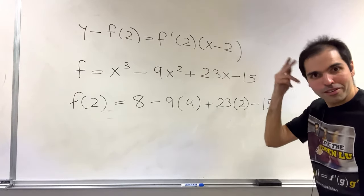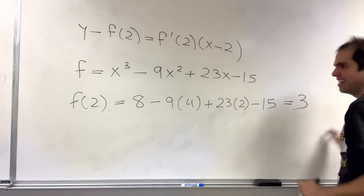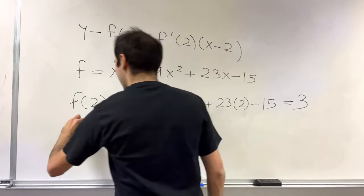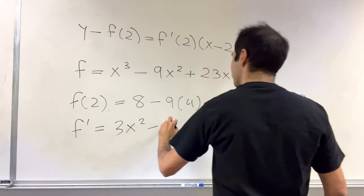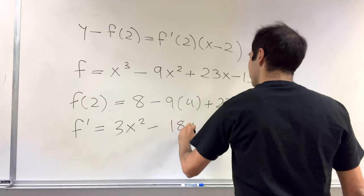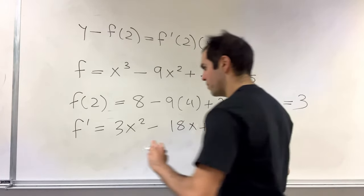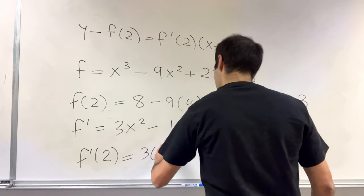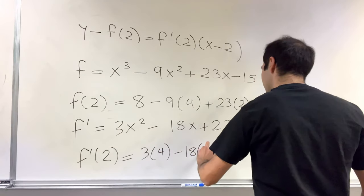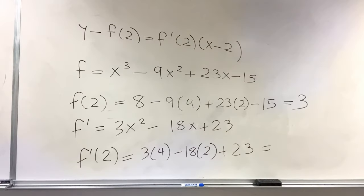And now what is the derivative? So f prime, that is 3x squared minus 18x plus 23. So f prime at 2, that's 3 times 4 minus 18 times 2 plus 23, and that simplifies to minus 1.